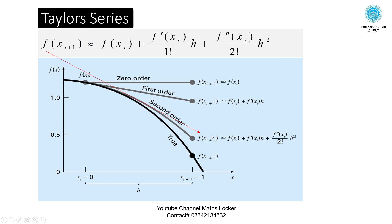If you are taking three terms, f of x i plus 1 is approximately equal to f of x i plus f dash of x i times h, plus f double dash of x i divided by 2 factorial times h squared — this is the second order function.